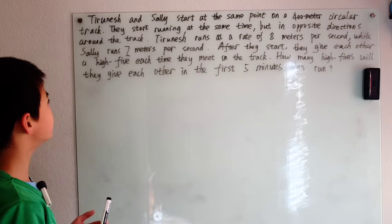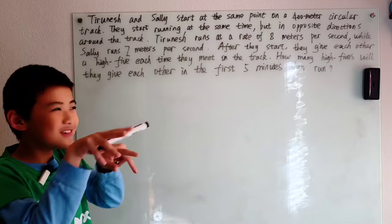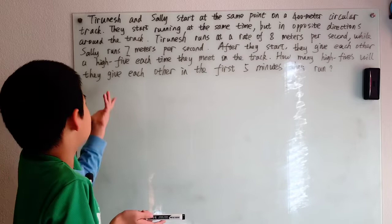Tranish and Sally start at the same point on a 400m circular track. They start running at the same time but in opposite directions around the track. Why would they do that? Isn't it pretty simple that you should run in the same direction that way it's easier to see who's faster and who's slower? Well, I guess they'll do what they want.